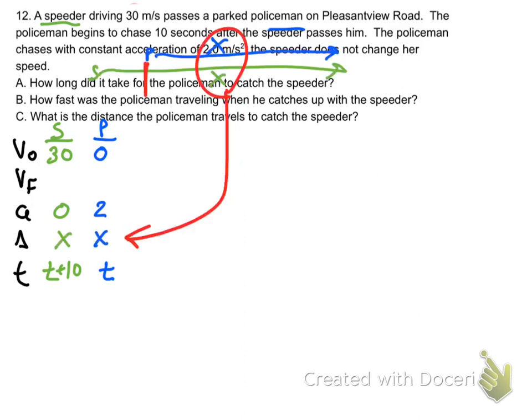Then we look at how far they traveled. The speeder's moving along, reaches the police car—that's when our problem starts—and then the police catches up to the speeder. So they both go the same distance x during our problem.